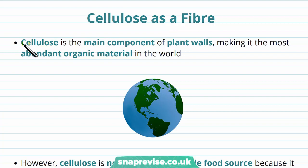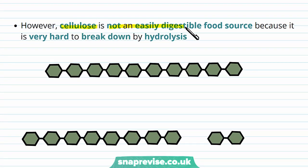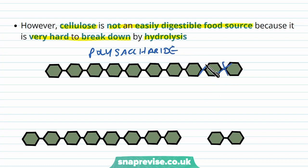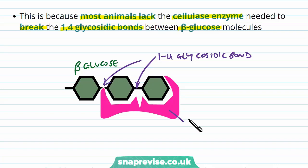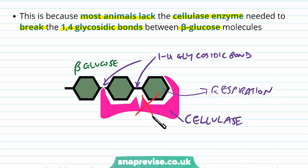Cellulose as an organic molecule is the main component of plant cells, and because there are so many plants across the planet, it's the most abundant organic material found in the world. However, cellulose as a fibre is not easily digestible because it's very hard to break down by hydrolysis. A lot of animals cannot do this because most lack the enzyme cellulase, which breaks the 1,4-glycosidic bonds between the beta-glucoses. If cellulase can do this, the beta-glucose released can enter respiration, but most animals don't have this enzyme.